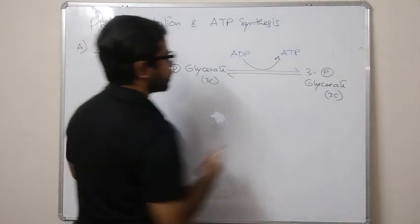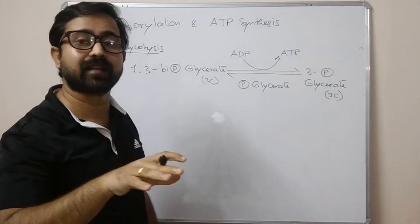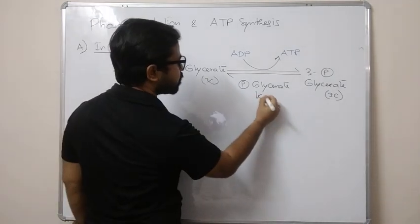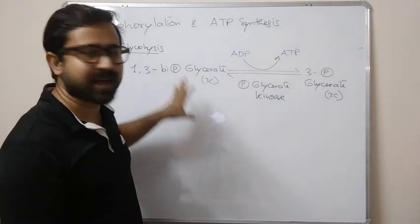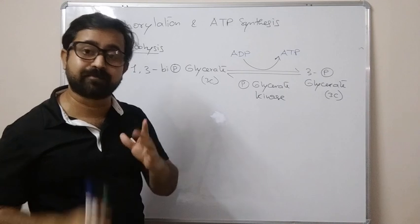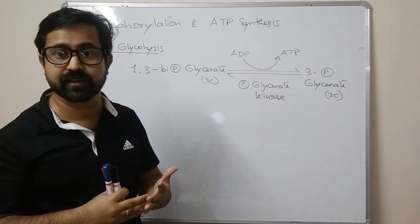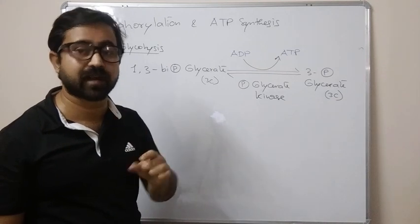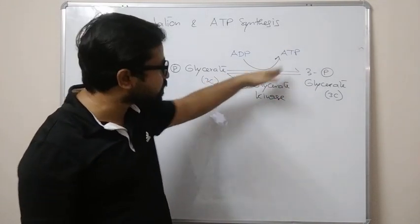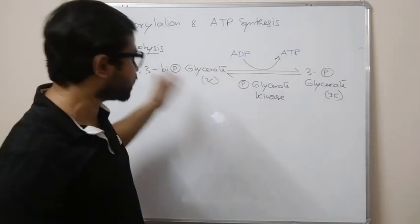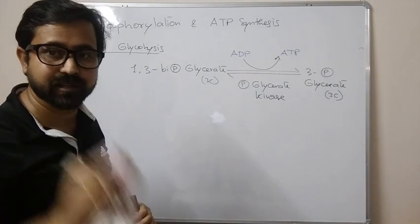This is the first example of substrate level phosphorylation you see in the glycolysis part. In glycolysis and substrate level phosphorylation, the reaction is: 1,3-bisphosphoglycerate gets converted into 3-phosphoglycerate. The enzyme name — where ATP or GTP is used — is kinase, specifically phosphoglycerate kinase. Interestingly, this reaction is also part of the Calvin cycle, in the reduction step.